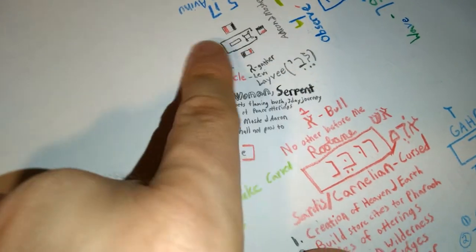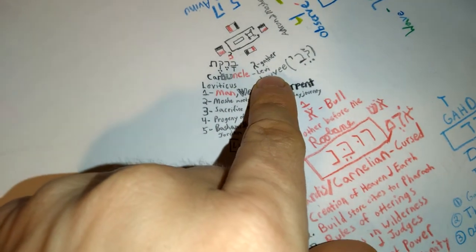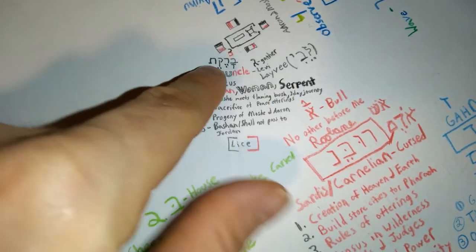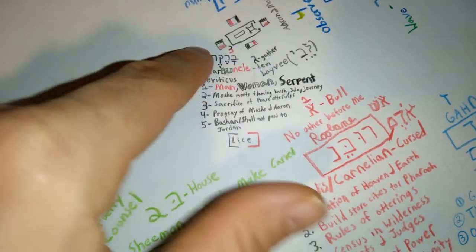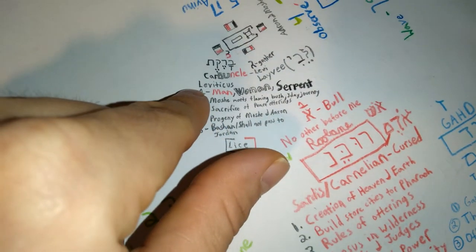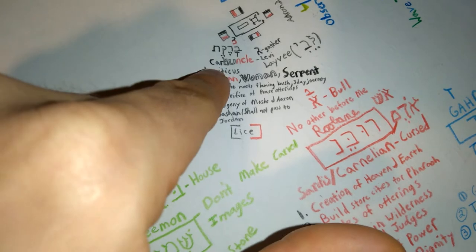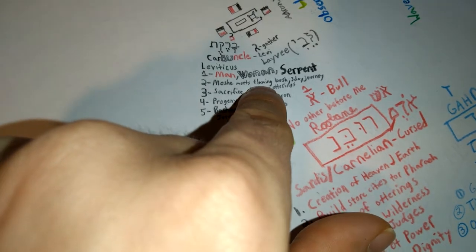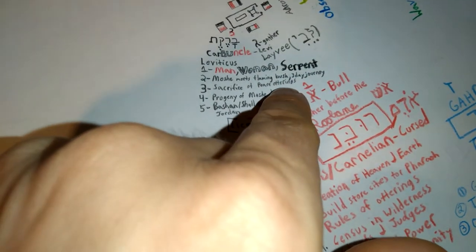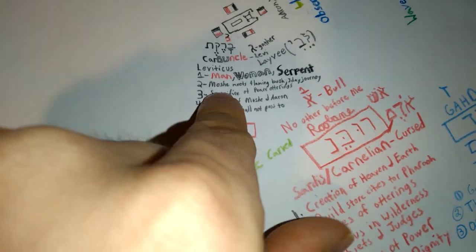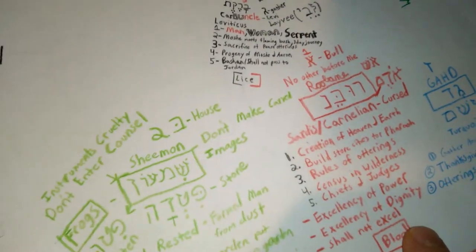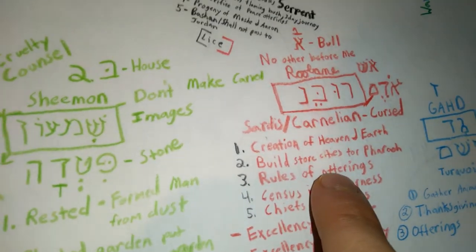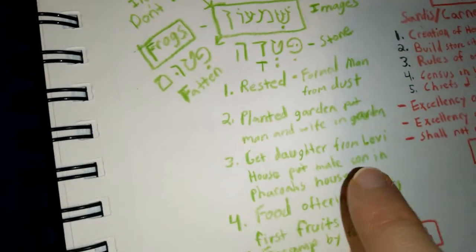And part of the scripture is, you see that the gimel, which is the third letter, obviously means gather. Now, people say carbuncle. It's a very special carbuncle because it had black, white, and red. And obviously, in the beginning, if you're looking into the scriptures for guidance, man, woman, and serpent. Moshe meets the flaming bush on his three-day journey, a sacrifice of peace offerings. And you've got to notice there's all these rules of offerings.